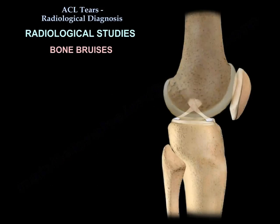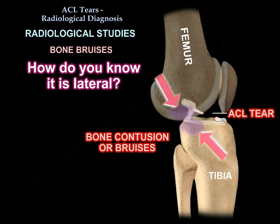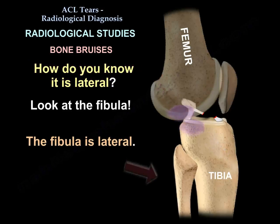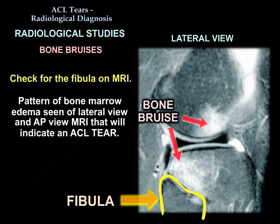ACL tear may cause bone bruises laterally — on the middle of the femoral condyle and the posterior aspect of the lateral tibia. To confirm the lateral side, look at the fibula, which is lateral. A look at the pattern of bone marrow edema seen on the lateral view and the AP view of the MRI will indicate an ACL tear.